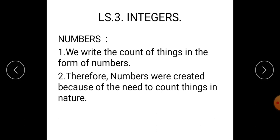One millennium year is made up of how many years? The answer is 1000. Therefore, we write the count of things in the form of numbers.